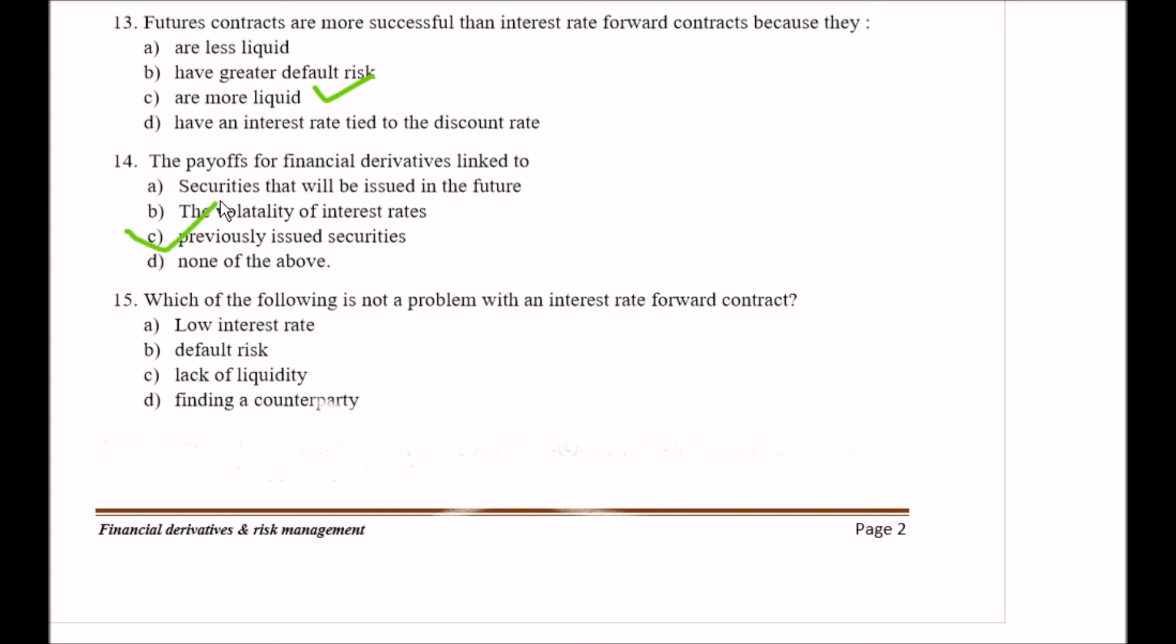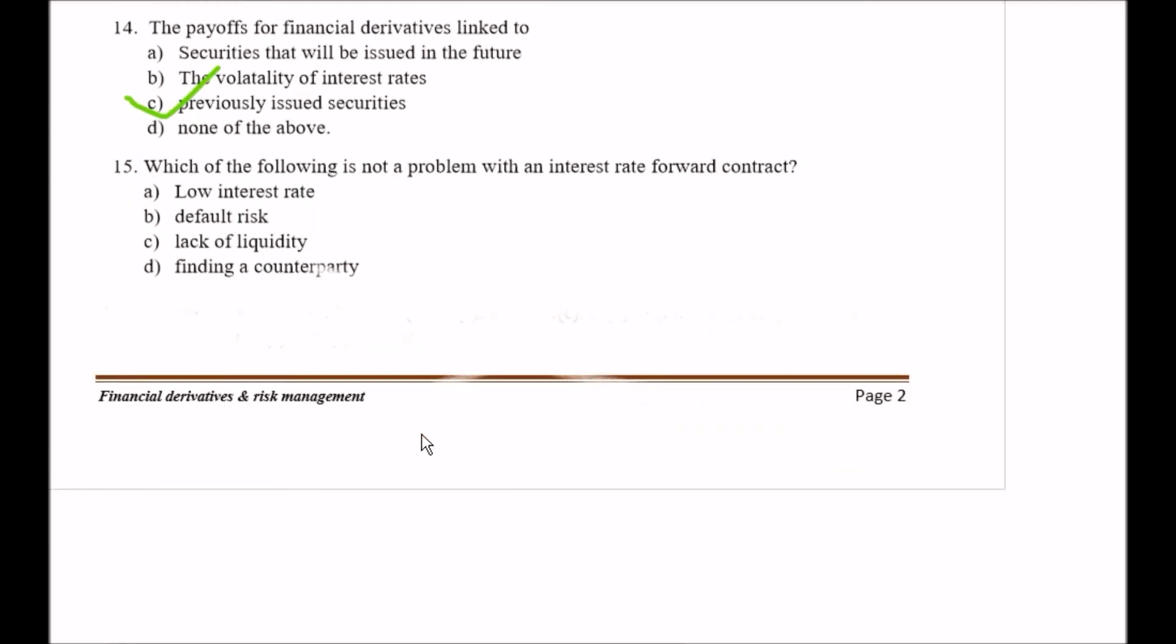Question number fifteen: Which of the following is not a problem with an interest rate forward contract? Option A low interest rate, Option B default risk, Option C lack of liquidity, and Option D is finding a counterparty. So here your right option is Option A, that is low interest rate.